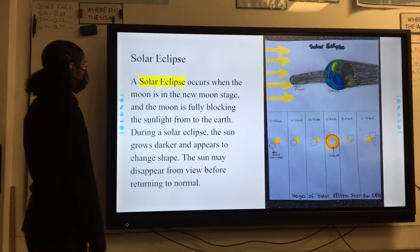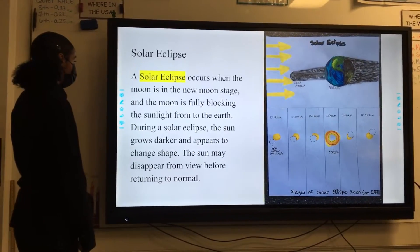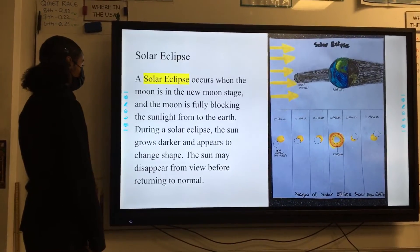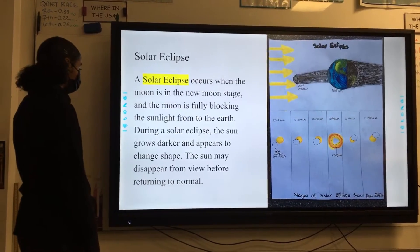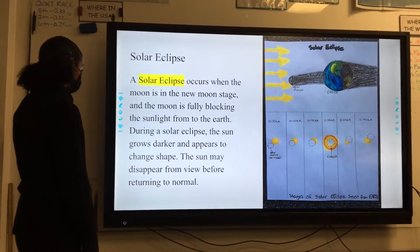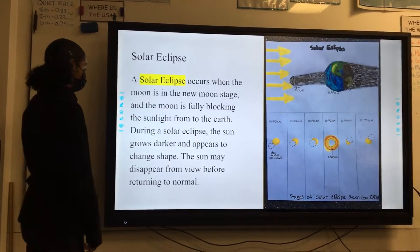Solar eclipse. A solar eclipse occurs when the Moon is in a new moon stage and the Moon is fully blocking the sunlight from the Earth. During the solar eclipse, the Sun grows darker and appears to change shape. The Sun may disappear from view before returning to normal.